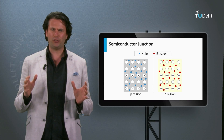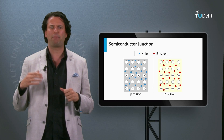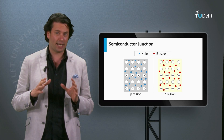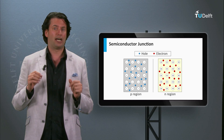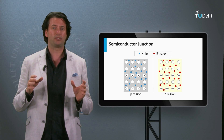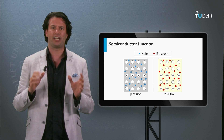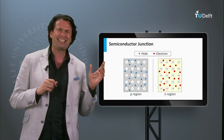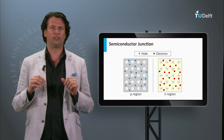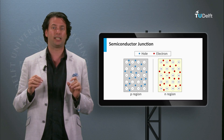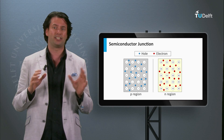We have introduced the fact that semiconductors can be doped, n-type and p-type. In the n-type material, the majority charge carriers are electrons, and the doping atoms that donated an electron are fixed positively charged in the network. In a p-type material, the majority charge carriers are holes, and the doping atoms that accepted an electron are fixed negative charges in the network.